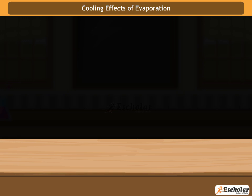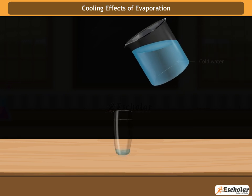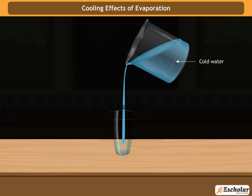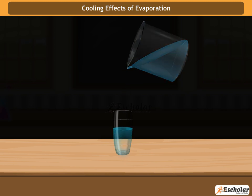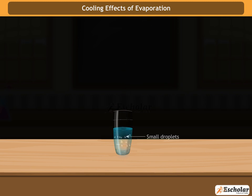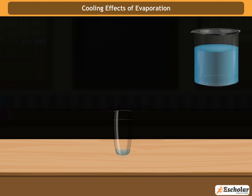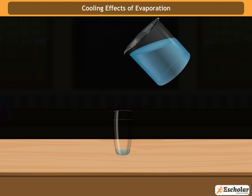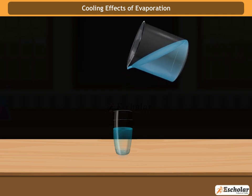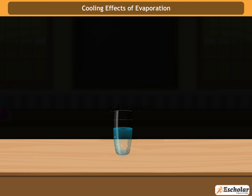Cooling effects of evaporation: take a glass and pour some cold water in it. What will you observe? You will observe small droplets on the surface of the glass. Where did they come from? Let us explain. The air contains a good amount of water vapors. When cold water is poured inside, the surface of the glass becomes cooler.